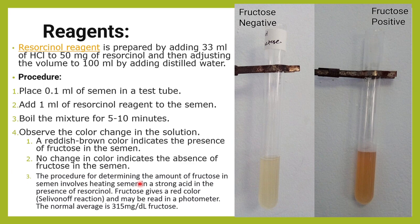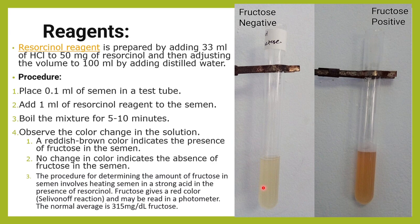How do we do this test? You prepare the resorcinol reagent by adding around 33 ml of HCl to 50 mg of resorcinol, then adjust the volume to 100 ml by adding distilled water. Take 0.5 ml of semen in a test tube, add 1 ml of resorcinol reagent, and boil this mixture for 5 to 10 minutes, then observe the color change. A reddish-brown color indicates the presence of fructose — this is called Seliwanoff's reaction. A photometer can also be used; the normal average is around 315 mg per deciliter of fructose.